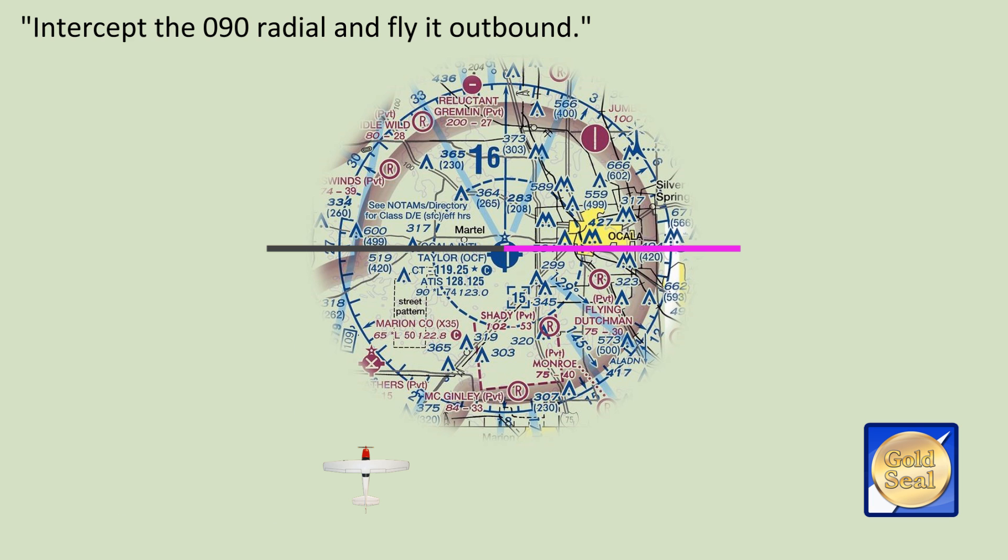Now, the examiner isn't going to be too much of a stickler. He doesn't care if you fly straight to the VOR and then turn eastbound on the radial, or if you fly to the right of the VOR and intercept the radial out there. But he does want to see that you know the proper procedures and terminology.